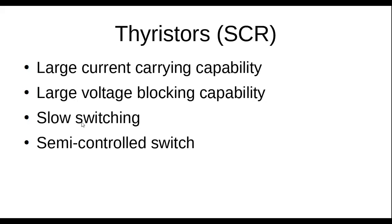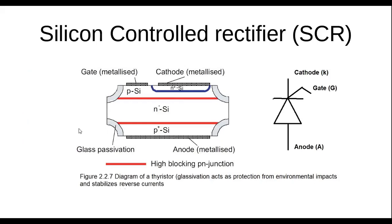Switching every 10 milliseconds is fine for rectification. The unique thing about this device is that it's a semi-controlled switch. You can switch it on the same way as a diode — it's like a diode with a gate terminal, so you use that gate terminal to control it. One unique thing is that you can switch it on; it's current controlled, so you give it a short pulse of current.